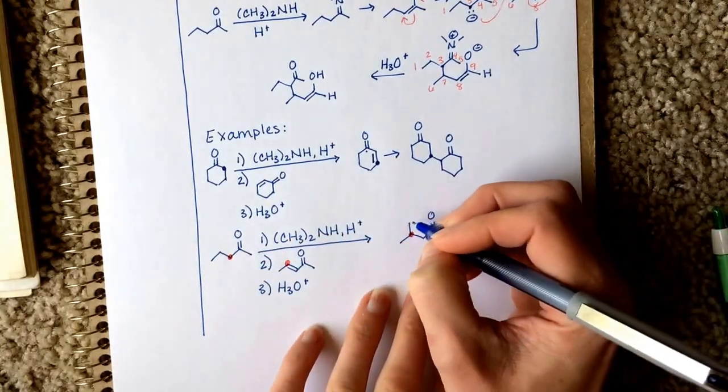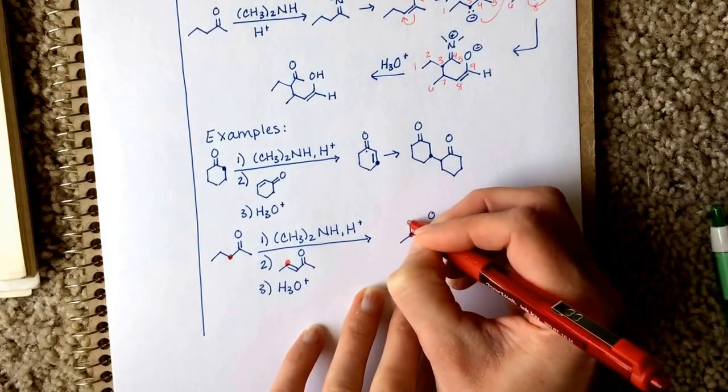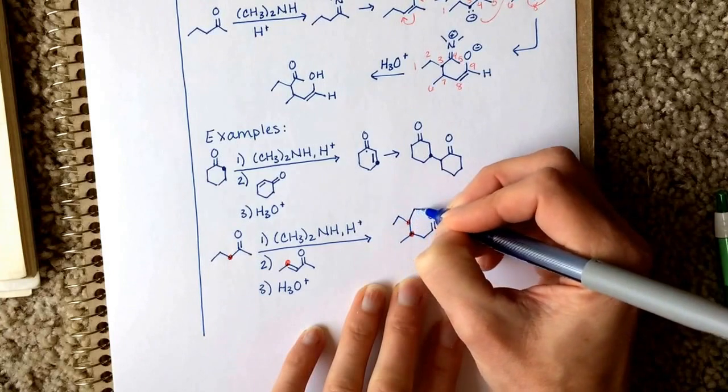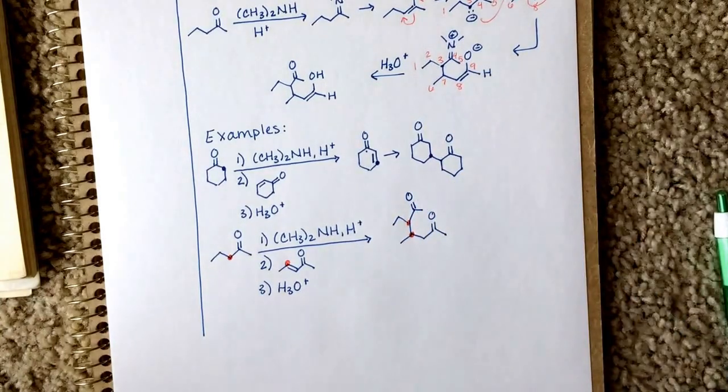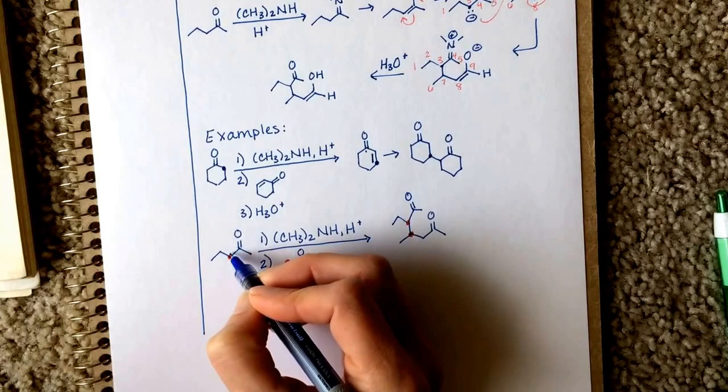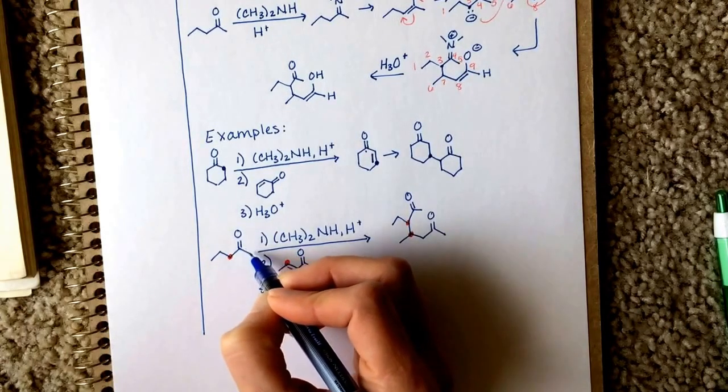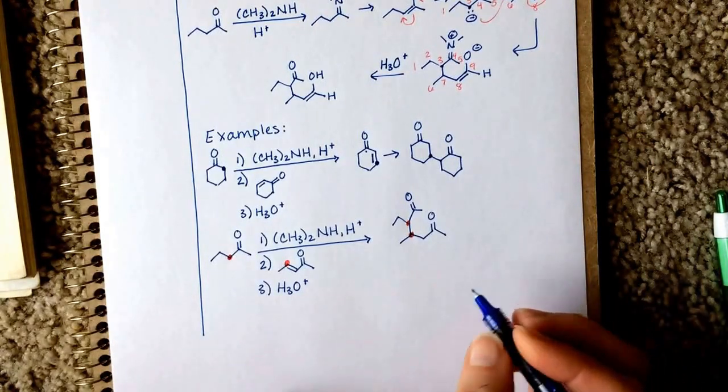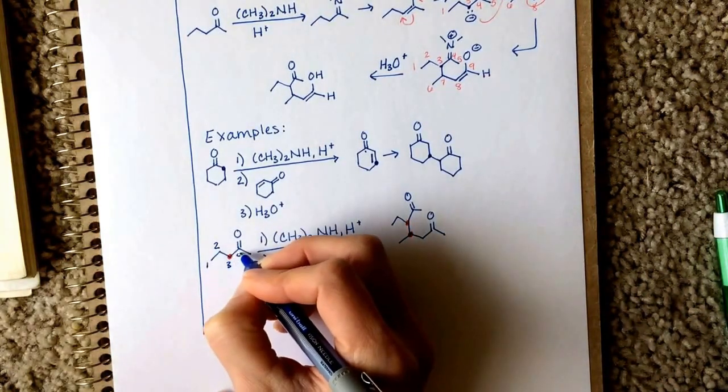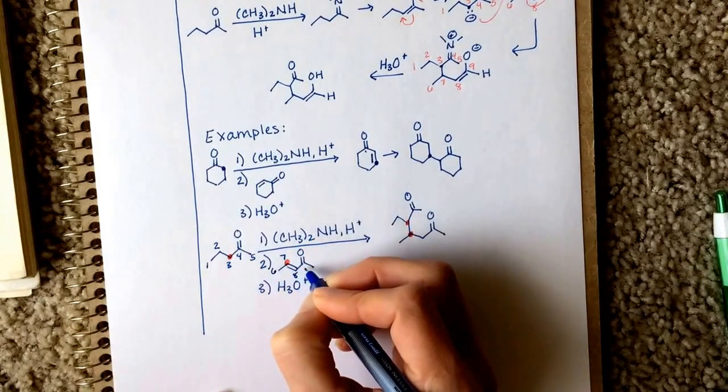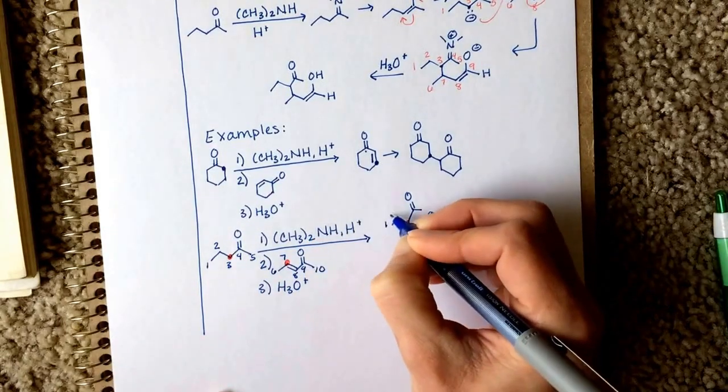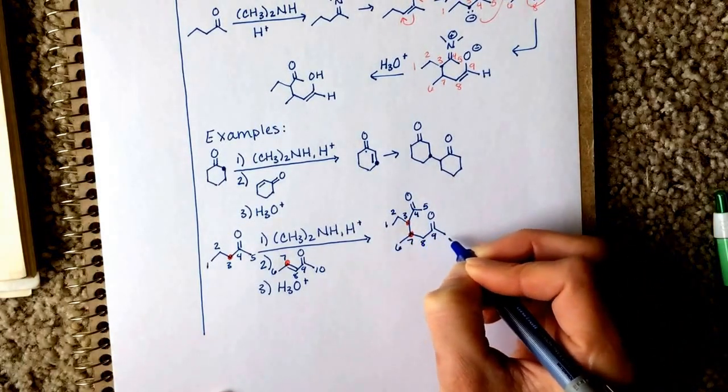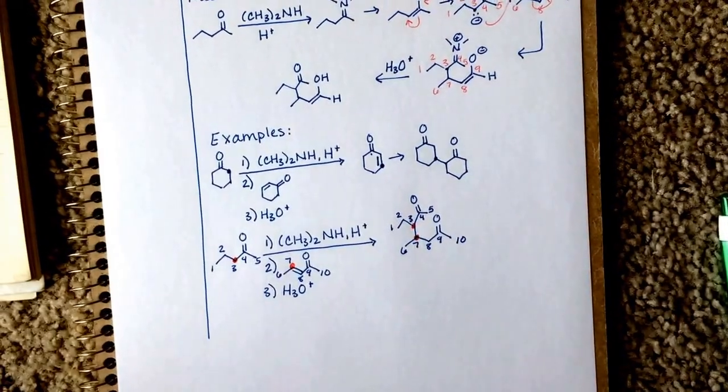And the reason for that is the enamine at some point has a carbon-carbon double bond in it, as you know. And it's going to favor the formation of the most substituted carbon-carbon double bond. So when it makes the enamine and it makes a double bond, it's going to put it here as opposed to putting it here because that is more stable. So there's our product. And that is the Stork-Enamine Synthesis.